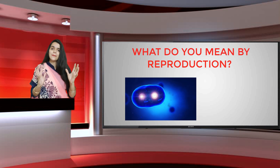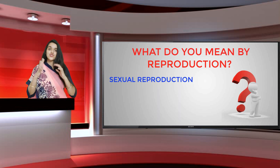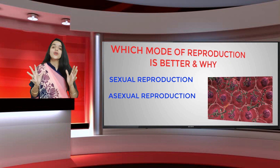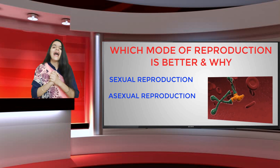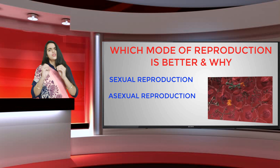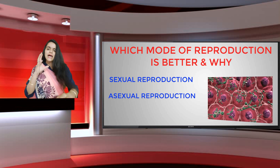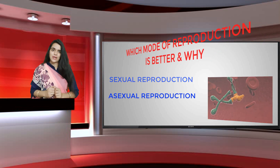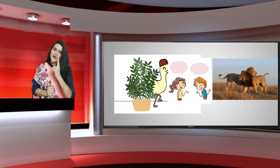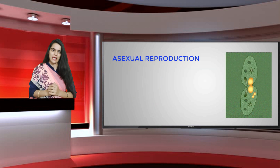There are two modes of reproduction: the first one is sexual and the other one is asexual. Today we will discuss which mode is better and why, looking at the pros and cons of both. A single individual can produce one or more offspring — but this is the case only in asexual reproduction.